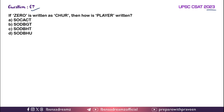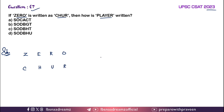Question 7: If ZERO is written as CHUR, then how is PLAYER written? For ZERO, the given code is C, H, U and R. Now we have to find the code for PLAYER.